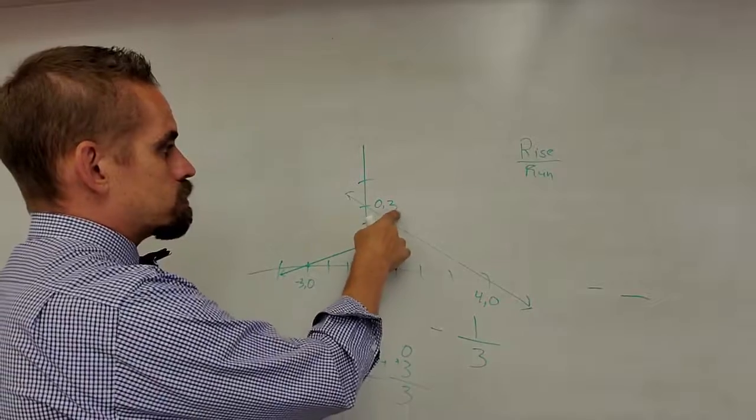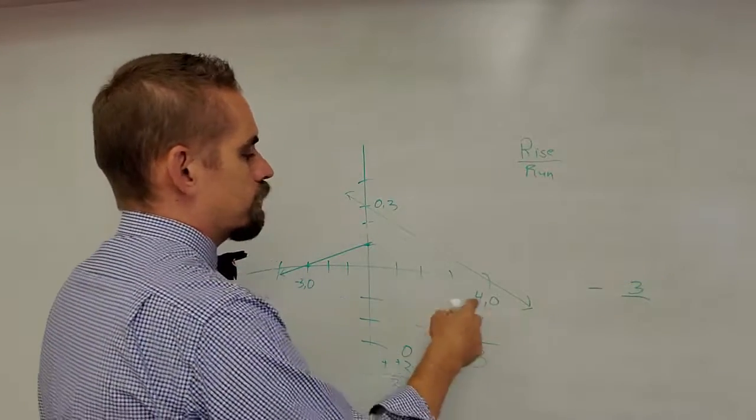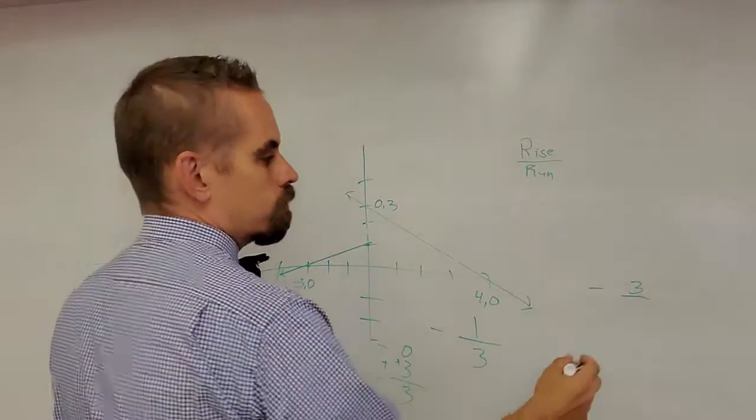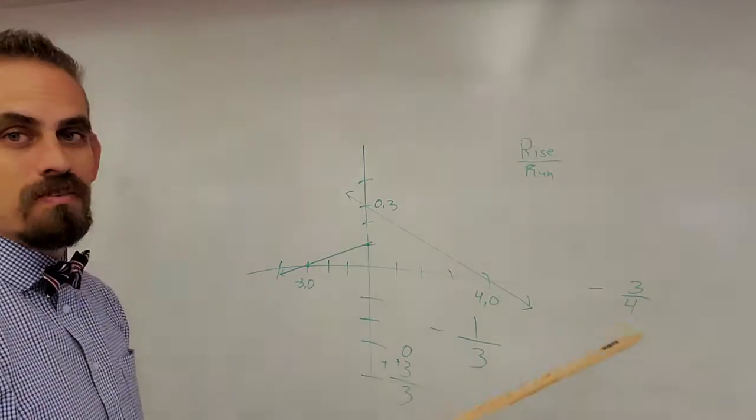So my rise, what's three minus zero? Three. And what's the difference in zero and four? Four. So my slope is negative three fourths.